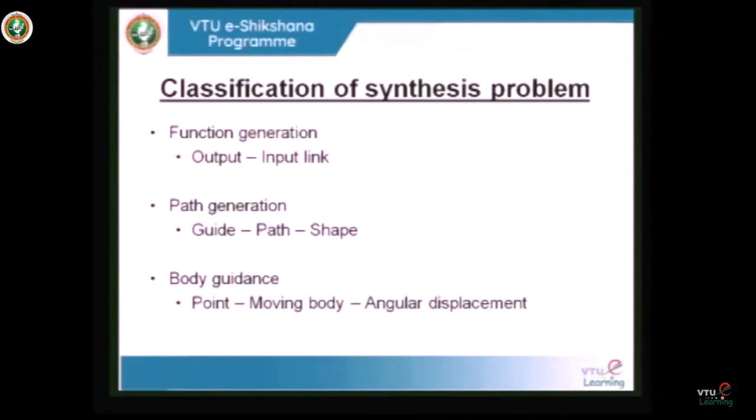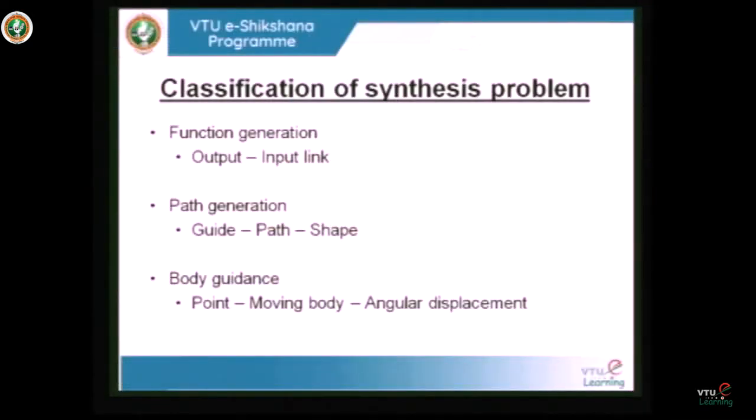Moving ahead, we have the classification of synthesis problems: function generation, path generation, and body guidance. In today's lecture, we will be addressing function generation. Function generation is the major classification of synthesis problems arising in the design of mechanism links — we want to generate a function in order to obtain the desired output for a known input, simulating the desired output for the given input. In function generation, we establish a link between input and output.